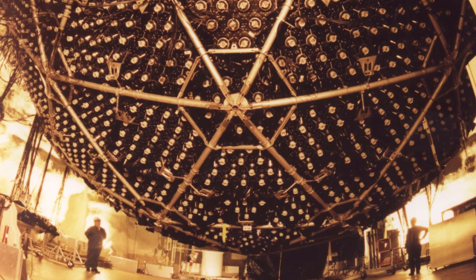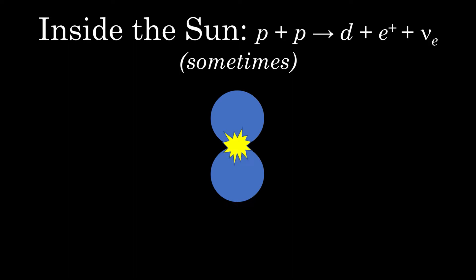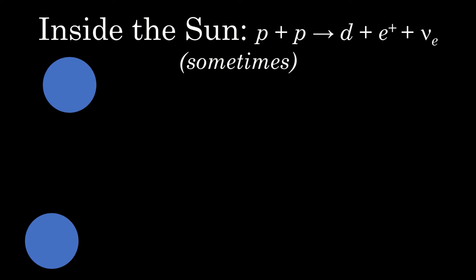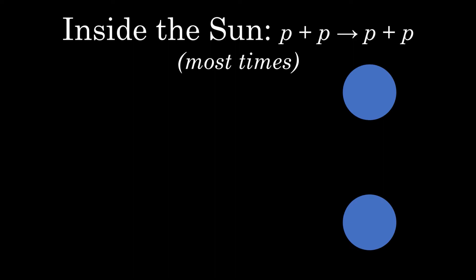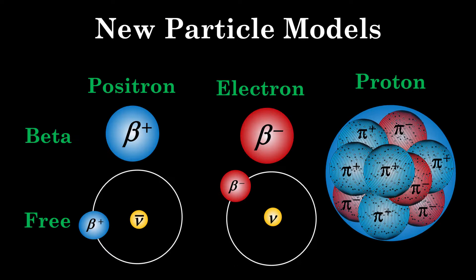These are the reactions that the Sudbury Neutrino Observatory used to declare that neutrino oscillations actually do occur. In the Sun, a deuteron forms when two protons collide and emit a positron and an electron neutrino. Ninety percent of the neutrinos from the Sun are produced this way. Although many pairs of protons are continually colliding within the Sun, only a small fraction of the collisions result in deuteron formation. So, how can our new particle models give some insight into why this is?